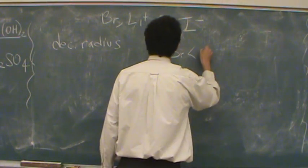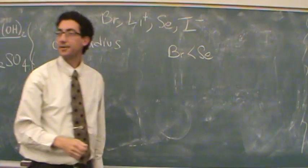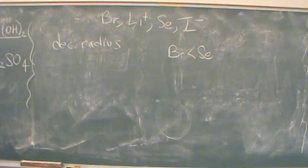Bromine is smaller than selenium. Okay, now let's take a look at the cations.